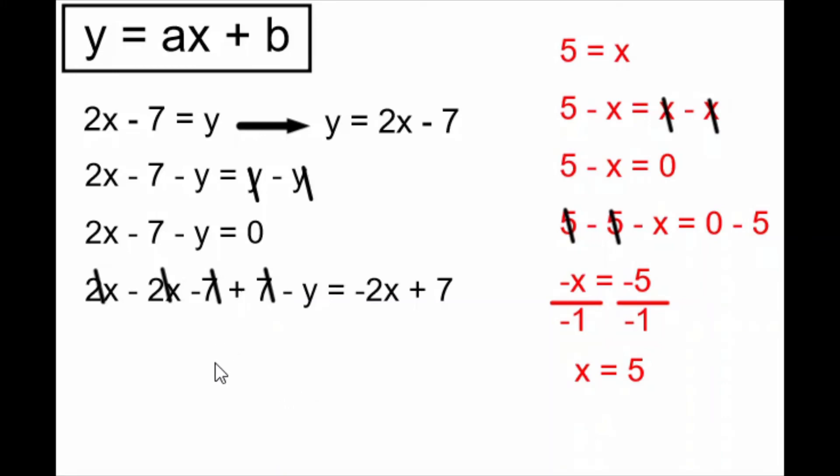The 2x's cancel and the 7's cancel, and what I'm left with is negative y equals negative 2x plus 7. I'm almost finished. My y is isolated on the left side of the equal sign, except it has a negative 1 with it that it's being multiplied by. So I can divide everything in the equation by negative 1. What I do on the left side has to also be done on the right side. All these negative signs cancel to leave me with y equals 2x minus 7.